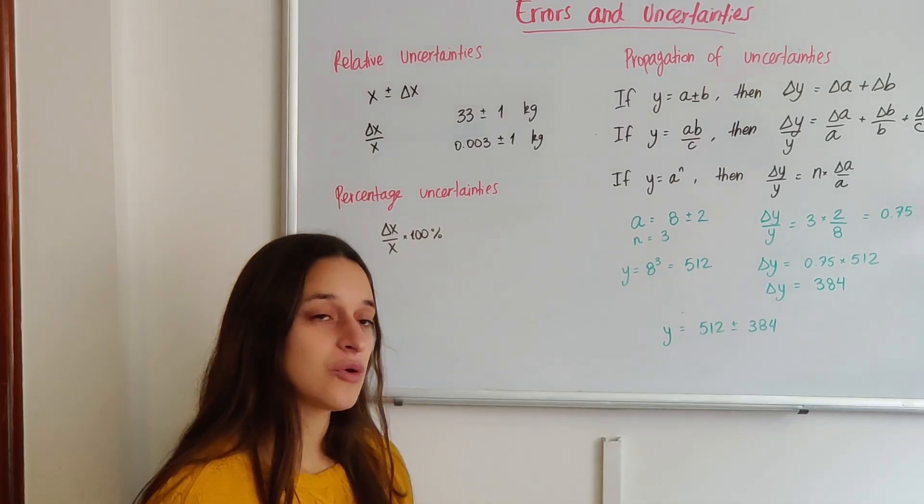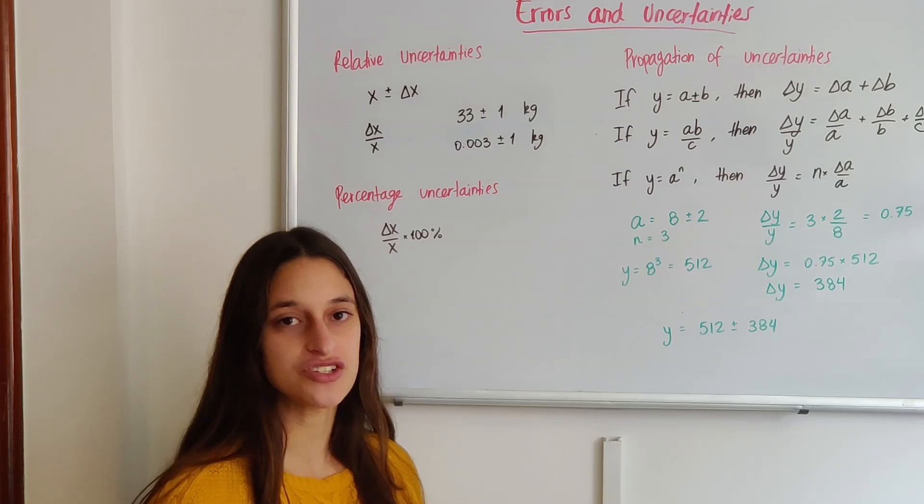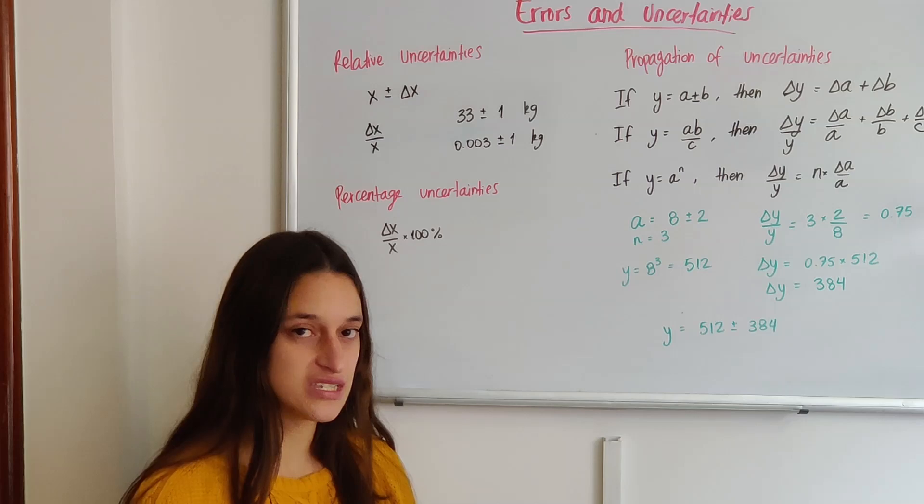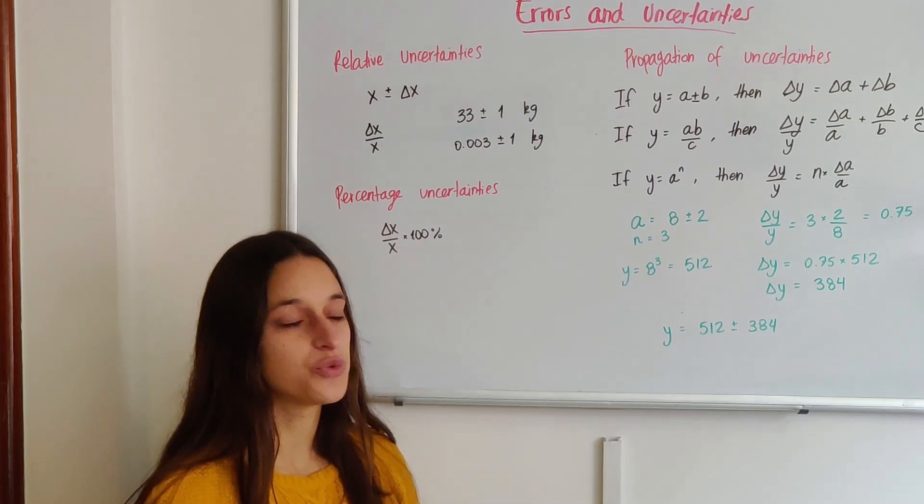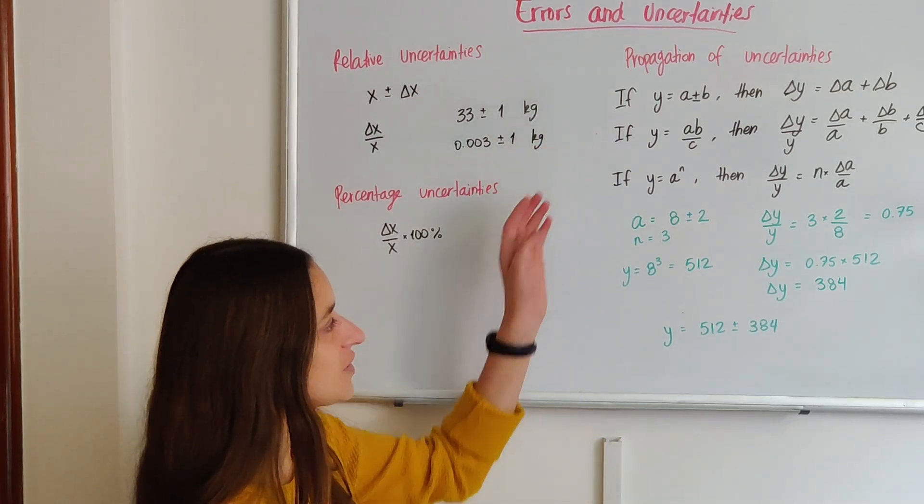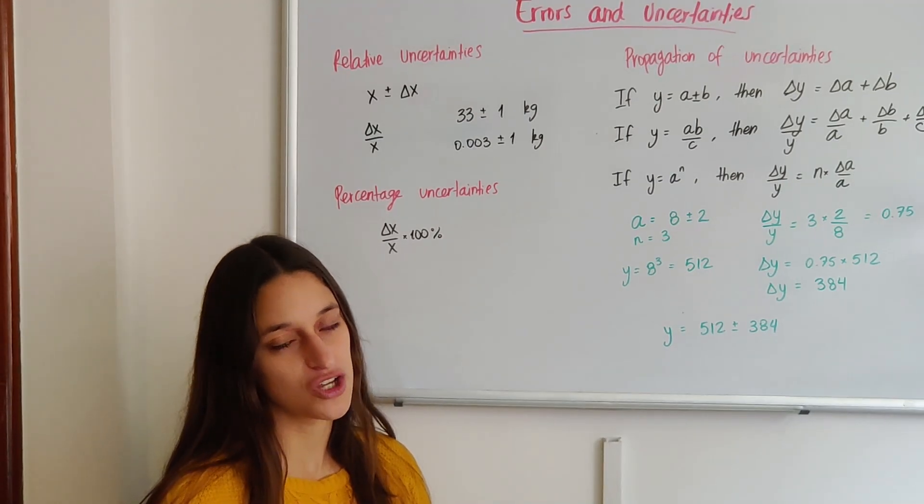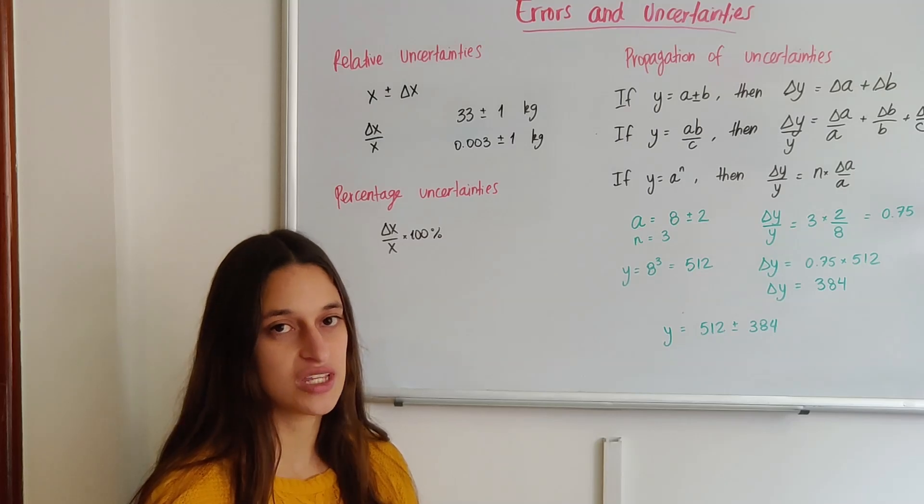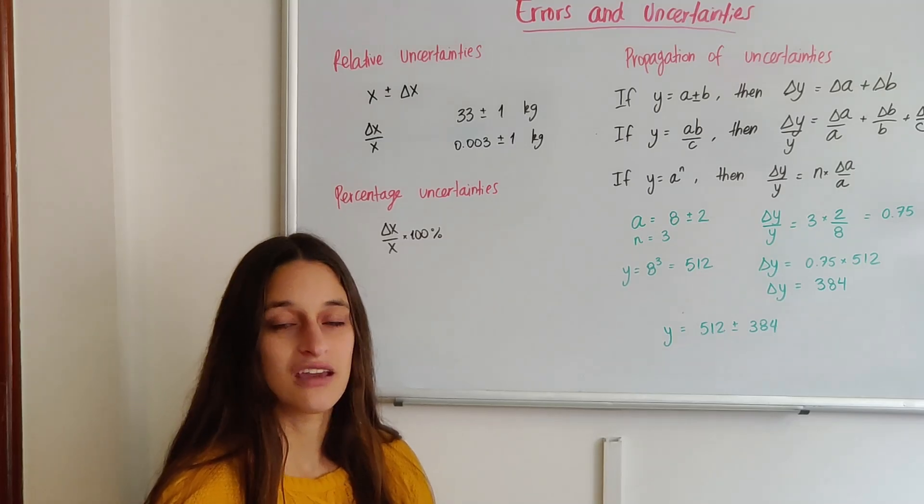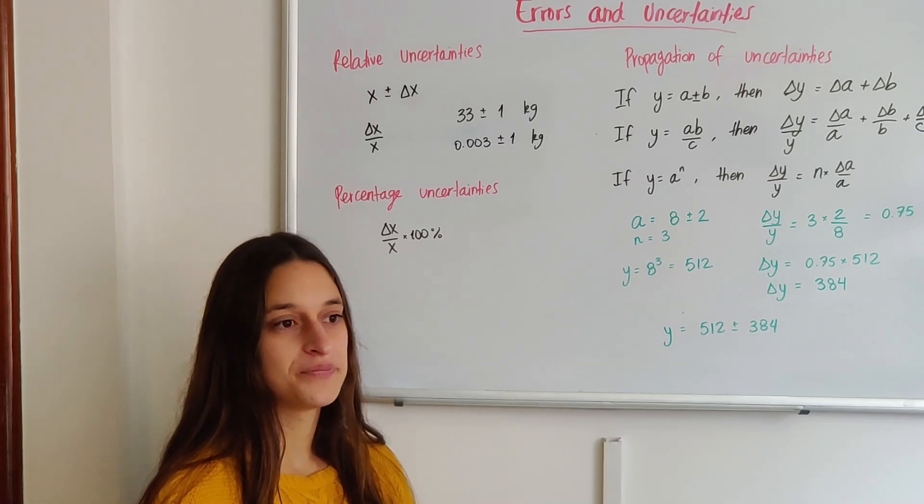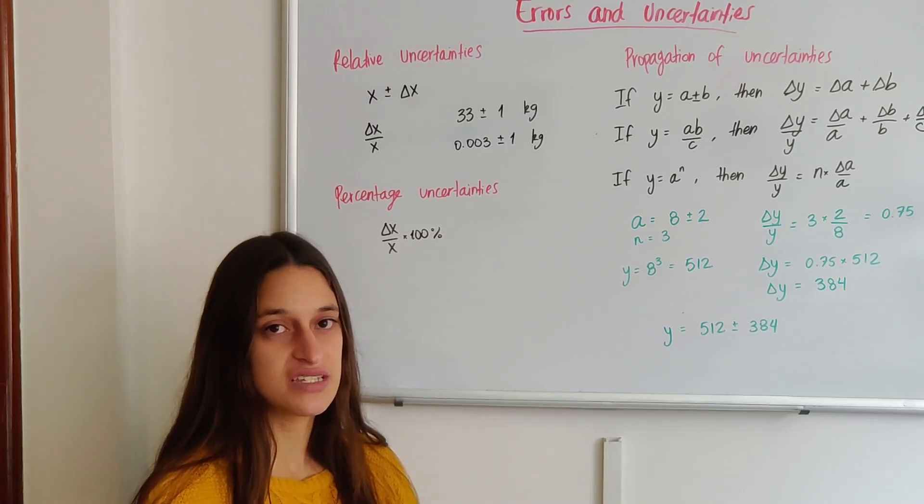And that's it. With every single equation that you get, and you want to put experimental values into the equation and see what the uncertainty is for your answer, you will use one of these three formulas that are in the booklet in order to calculate the uncertainty of a calculated answer from measured experiments with uncertainties. And finally, we're going to look at how we express uncertainties in a graph.